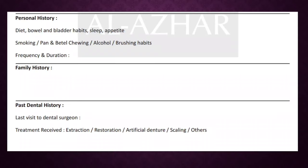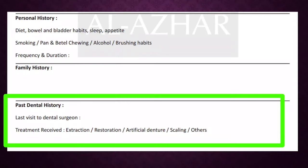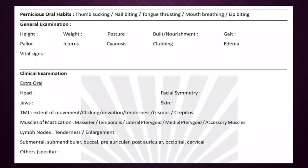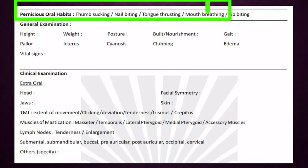Past dental history covers when the patient last visited a dental surgeon, what treatment they underwent, and whether it was an eventful or uneventful episode. Pernicious oral habits or deleterious habits, already mentioned under personal history, can be listed here as well.